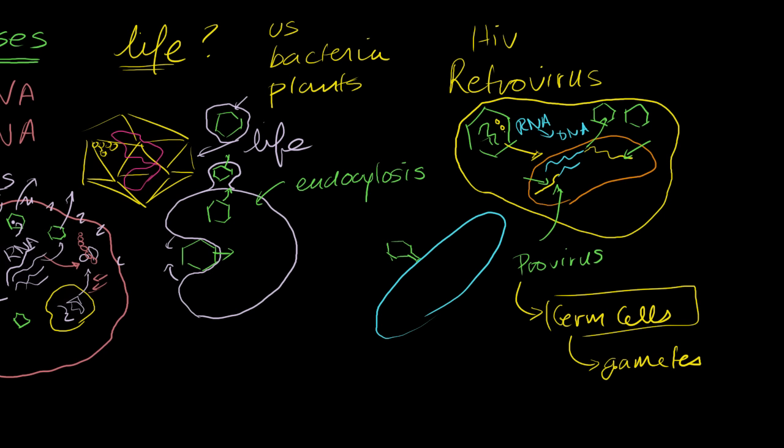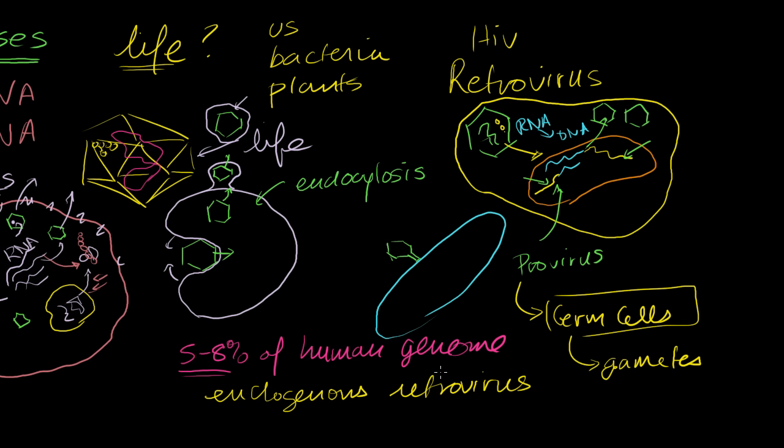People estimate that 5% to 8% of the human genome is from viruses, from ancient retroviruses that incorporated themselves into the human germline, into human DNA. These are called endogenous retroviruses, which is mind-blowing. It's saying that 5% to 8% of our DNA actually comes from viruses.